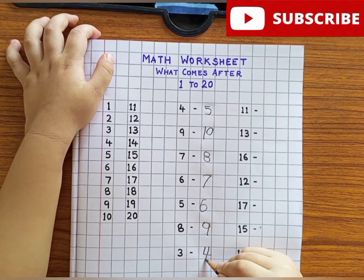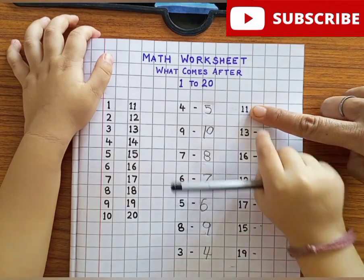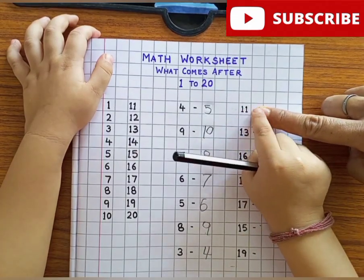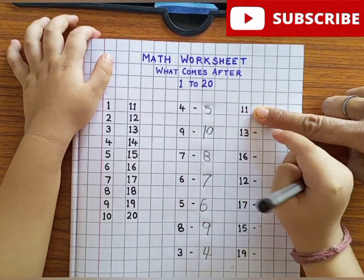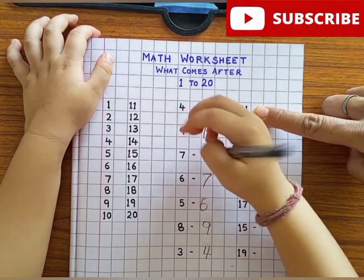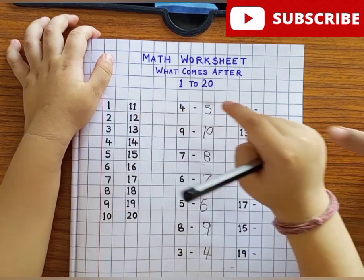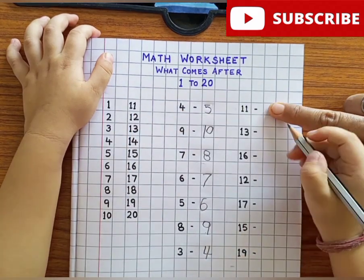Very good. This is number? 11. What comes after 11? 12. Right here.